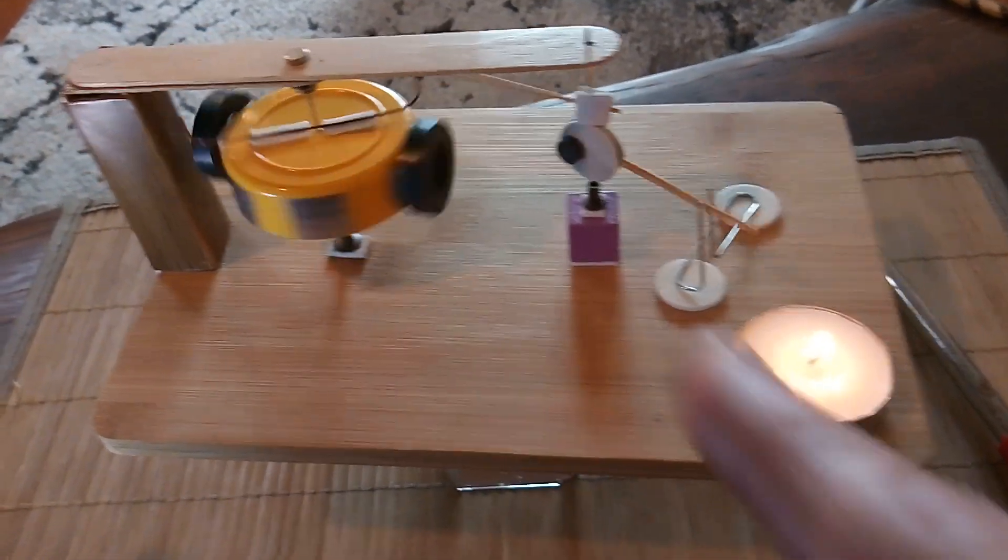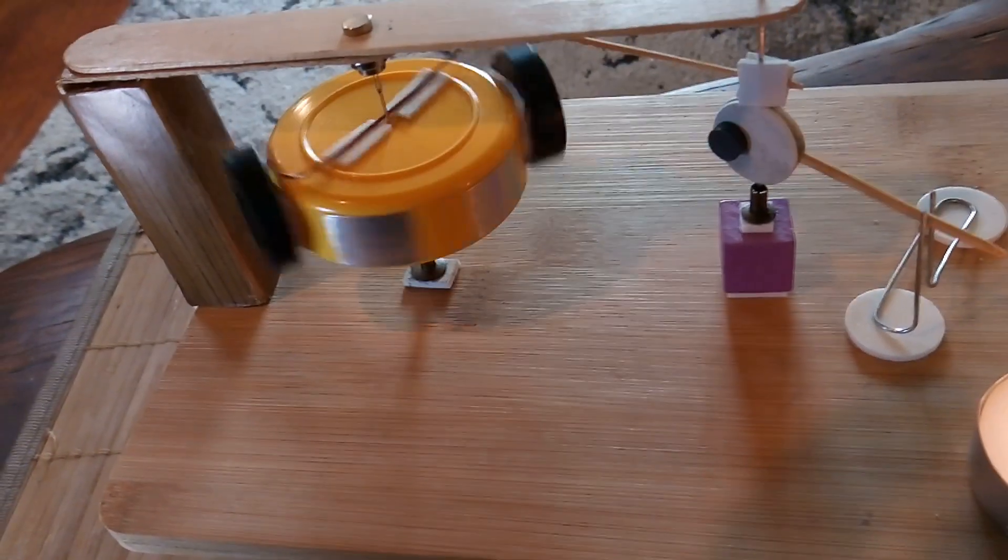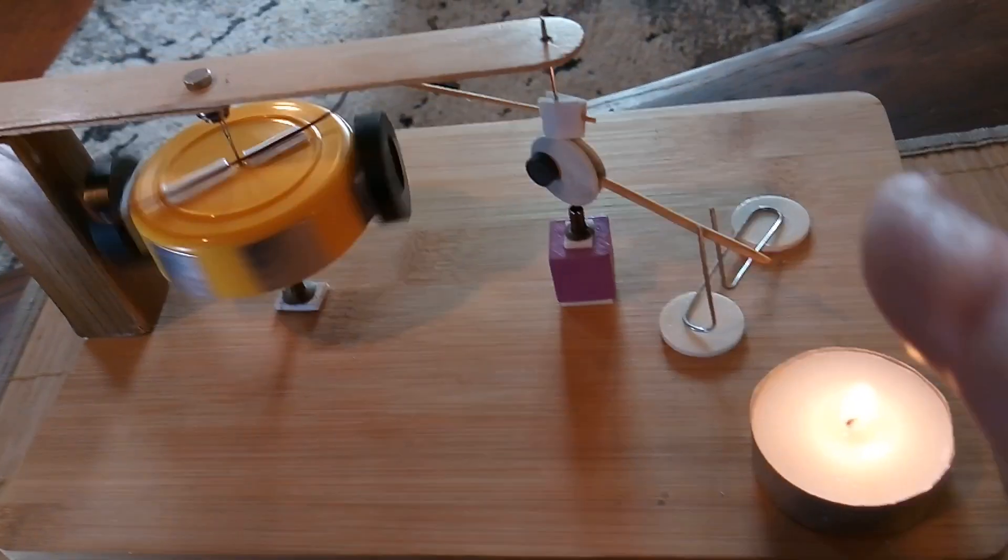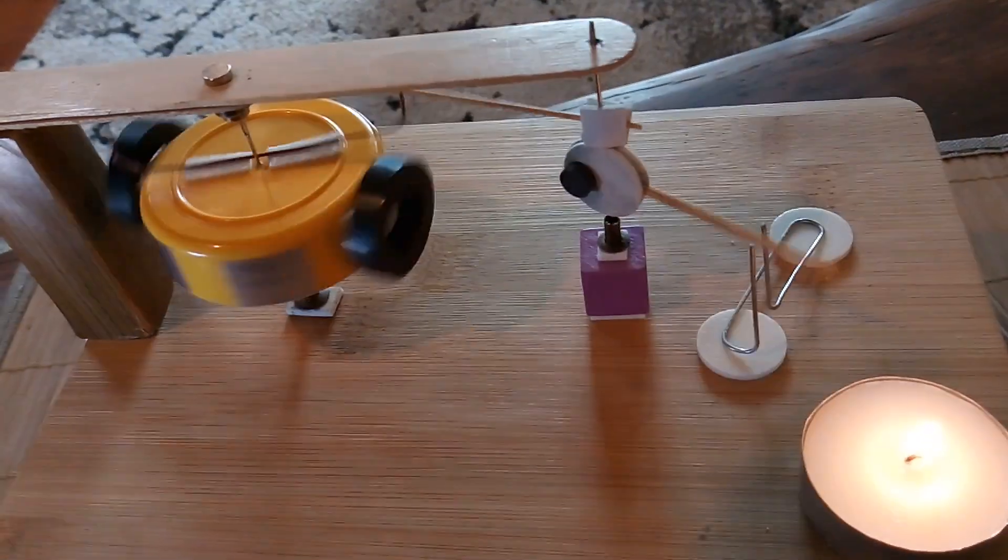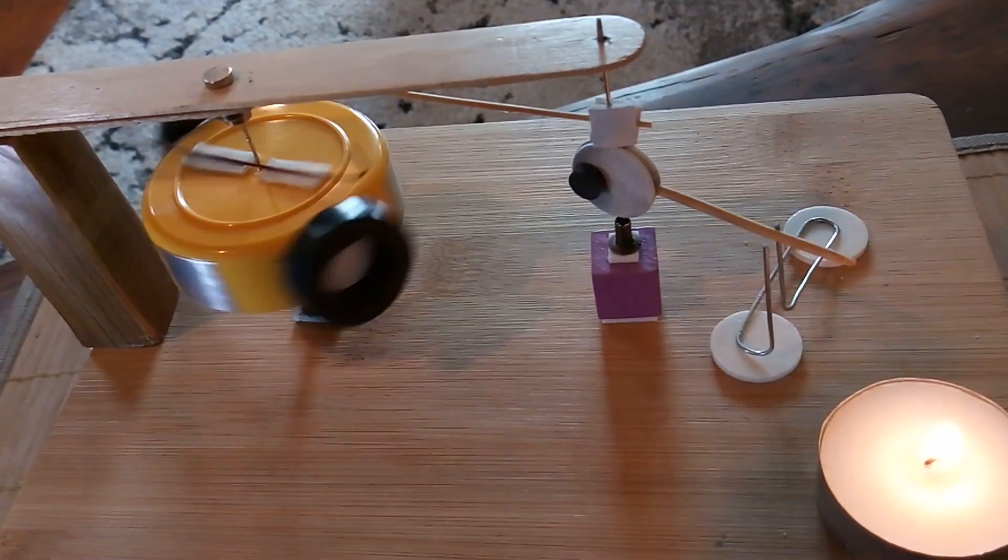And as that trip wire goes around there, it hits that little toothpick just barely, just enough to rotate that magnet so it looks like the magnet is actually turning the rotor around. And like I say, it makes a really good illusion.